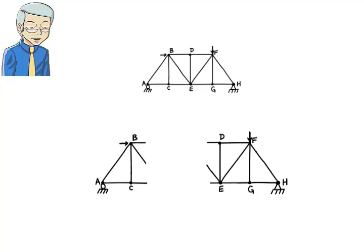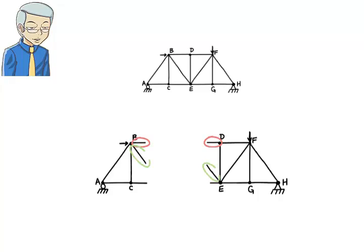Naturally, the actual truss members need to remain intact if the structure is to carry the intended load. This method of cutting a structure into parts is a convenient way for determining some of the unknown member forces without needing to analyse the entire truss. More specifically, the method enables us to rather quickly calculate the force in one or more cut truss members. In this particular example, we can determine the force in members BD, BE and CE without needing to analyse the entire structure.